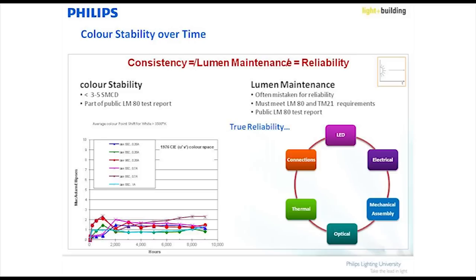This delta u-prime v-prime should not be too large. A standard LED in the market has about 0.03 delta u-prime v-prime difference. We keep our LEDs within a 0.01 difference. So really ask for the 0.01 specification, or ask for a color-over-angle qualification for your LEDs.